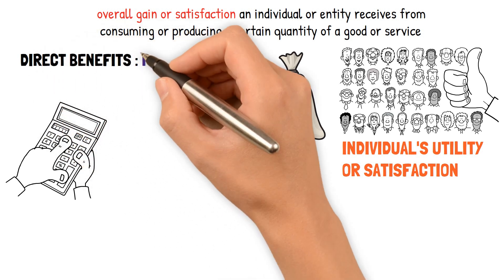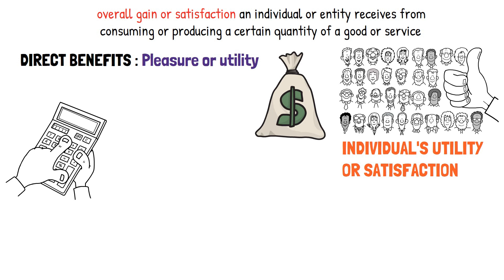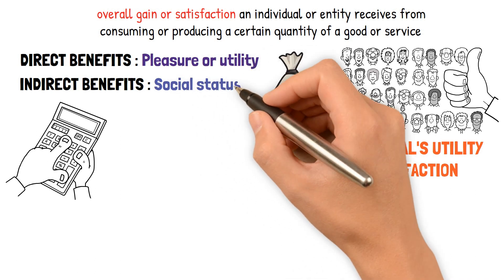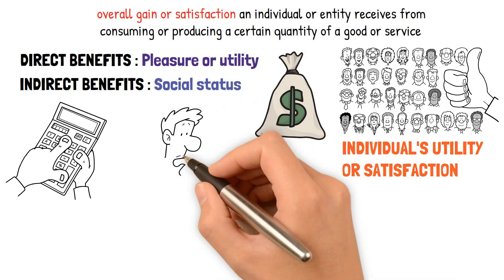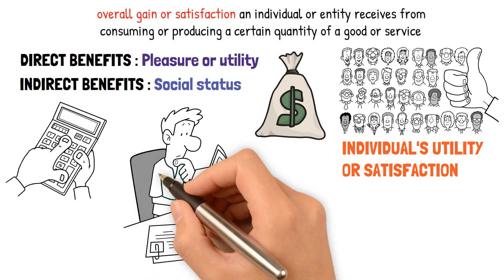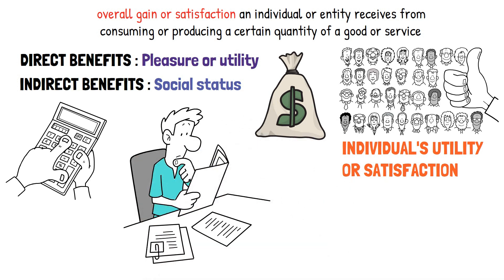These may include direct benefits, such as the pleasure or utility that comes from consuming goods, and indirect benefits, such as the social status or sense of community associated with certain types of consumption. Sometimes it may be challenging to quantify or measure all the benefits resulting from a particular decision or action.